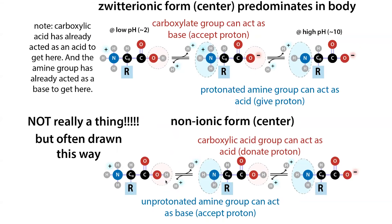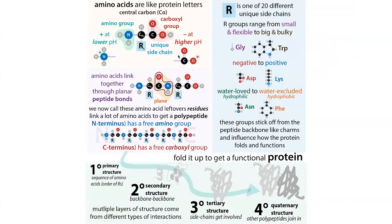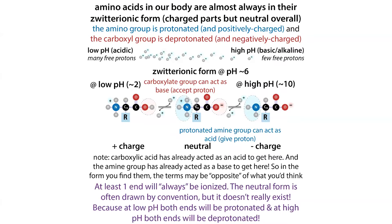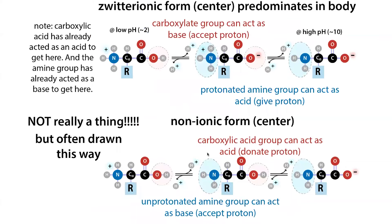At physiological pH, so like in our body, it's going to be in the deprotonated form — the carboxylate form, the conjugate base. Don't worry too much about this terminology. Just know that technically when you see an amino acid floating around in your body, it's in what we call a zwitterionic form, where it has a positive part and a negative part that cancel out. The amino group is going to be protonated and the carboxylic acid group is going to be deprotonated to the carboxylate form. This is typically how you would actually find an amino acid, although often drawn in the neutral form, which isn't really accurate.